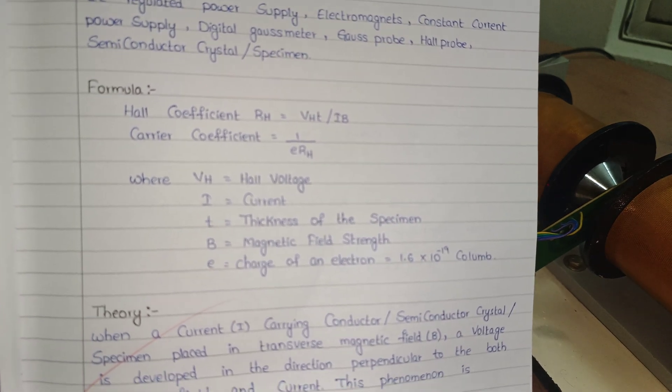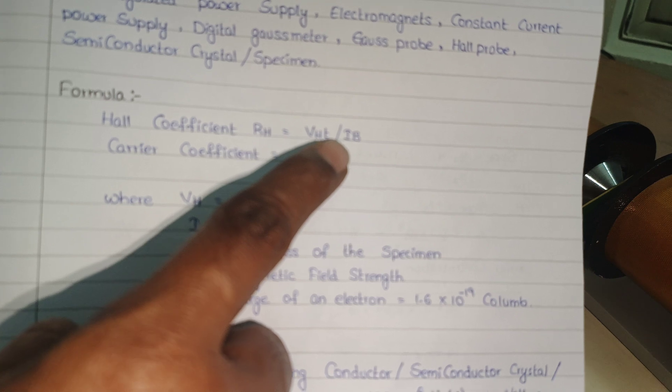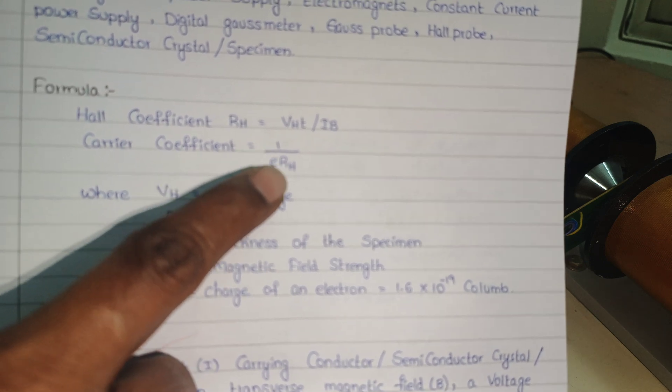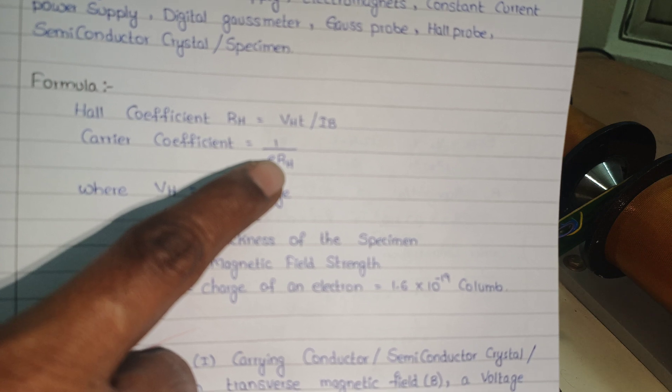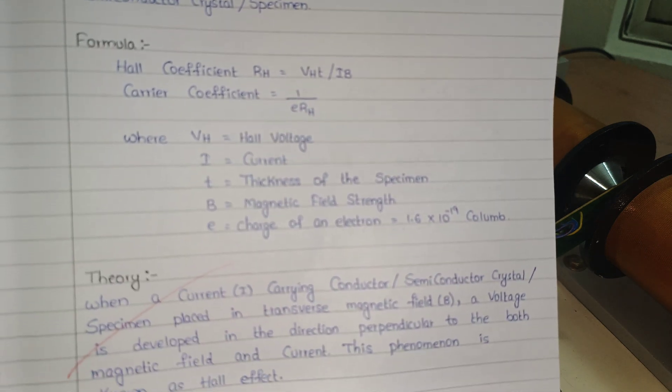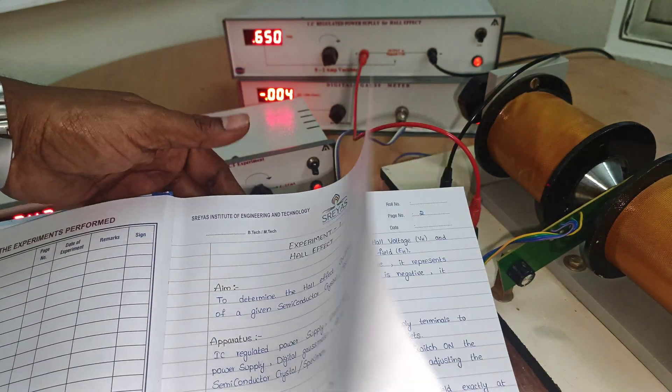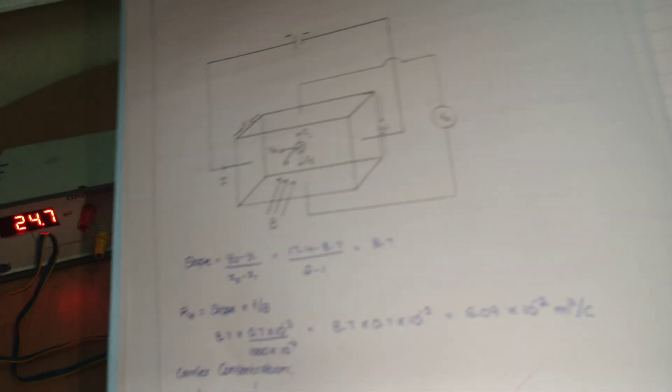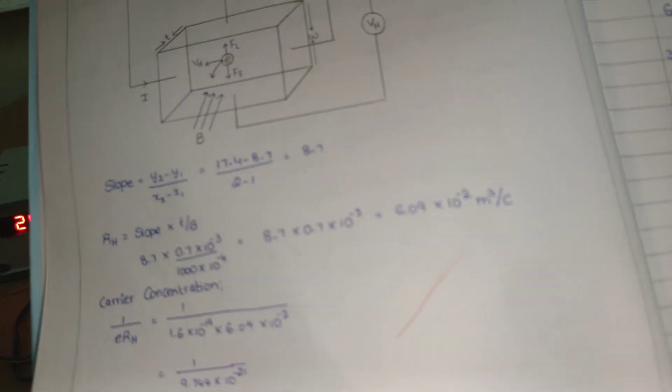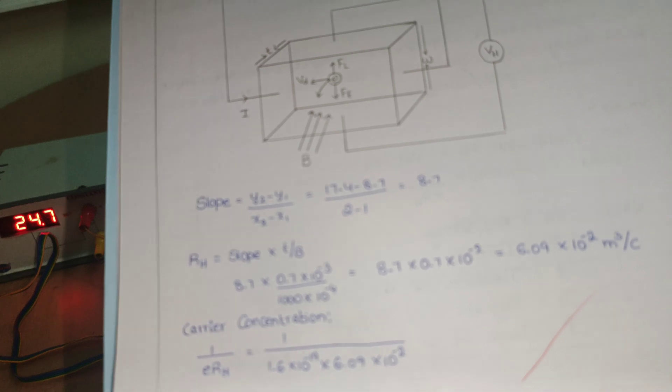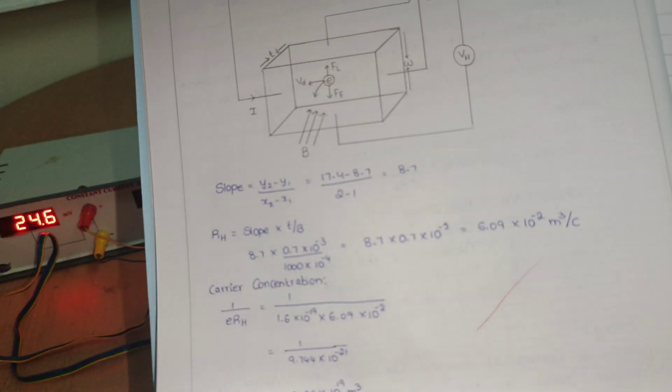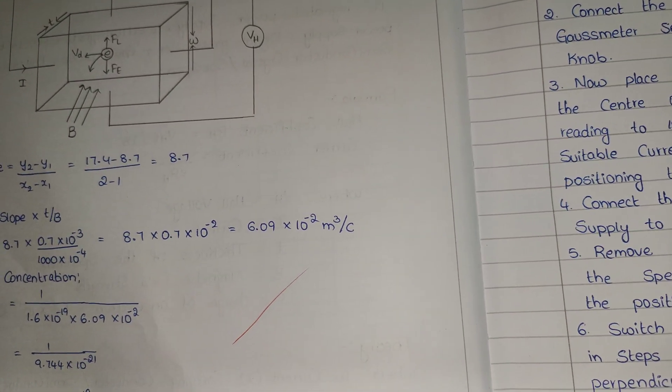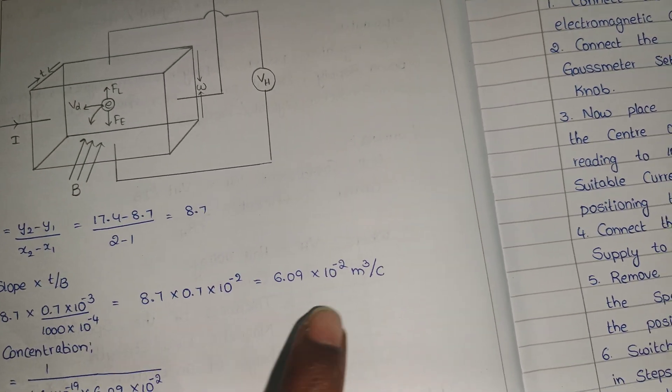So here to calculate Hall coefficient, we have to use RH is equal to VH into T by I into B. VH by I is the slope, that slope already we know: 8.7. And here T, thickness of the sample given, that is 0.7 mm, 0.7 into 10 to the power of minus 3. So here we have 6.09 into 10 to the power of minus 2 meter cube per coulomb. This is the Hall coefficient.